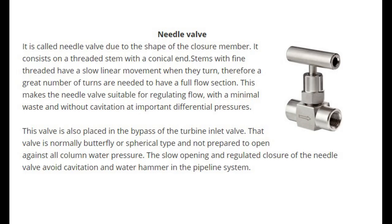The needle valve is named due to the shape of its closure member. It consists of a threaded stem with a conical end; stems with fine threads have a slow linear movement when turned, so a great number of turns are needed to achieve full flow. This makes the needle valve suitable for regulating flow with minimal waste and without cavitation at important differential pressures. This valve is also placed in the bypass of the turbine inlet valve, and the slow opening and regulated closure of the needle valve avoid cavitation and water hammer in the pipeline system.